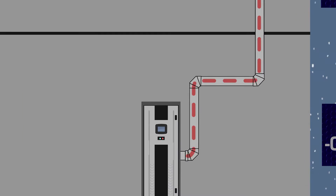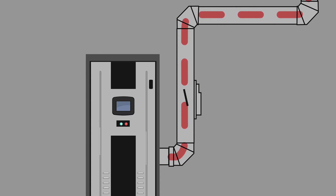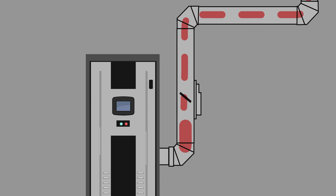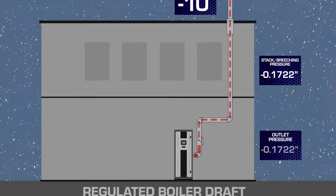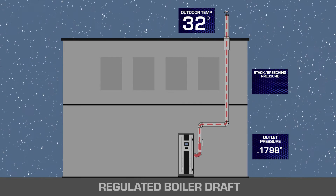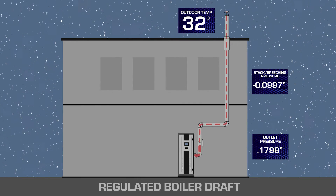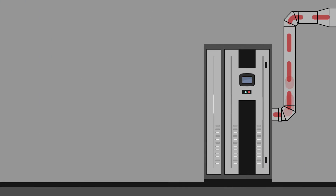To ensure Category 4 operation, Shebbler's sequence draft control dampers can be applied to this system. These actuated dampers will control the outlet pressure of each appliance to make sure Category 4 operation is accomplished at all times, under all firing rates and all ambient temperature conditions.